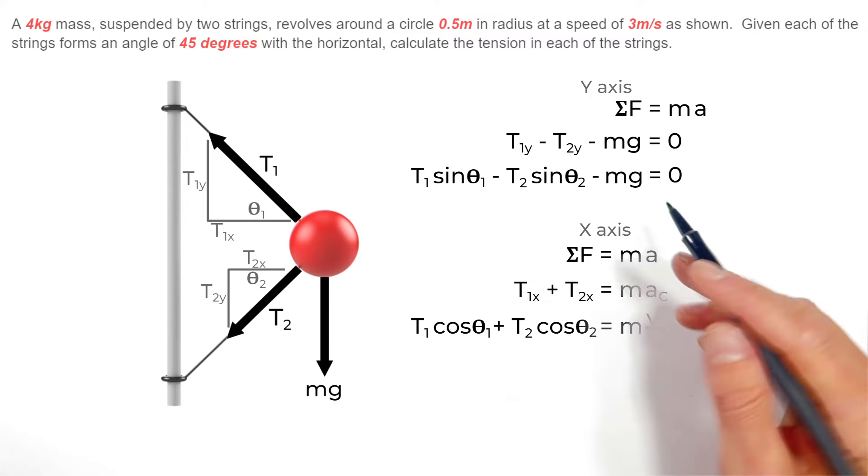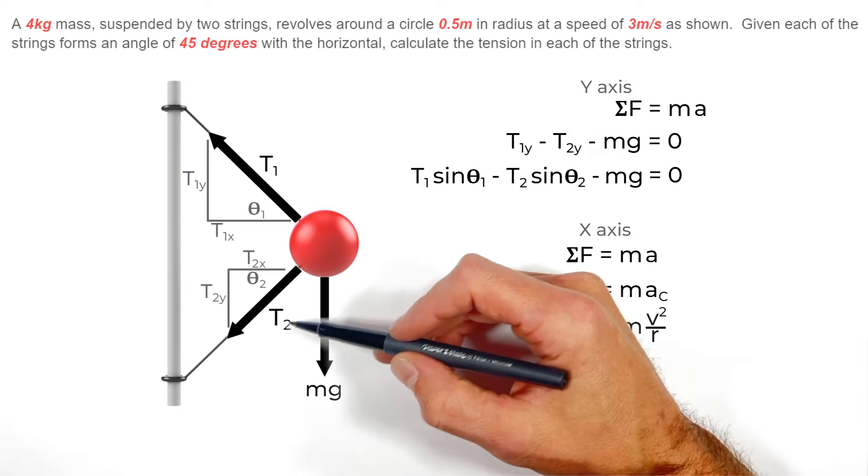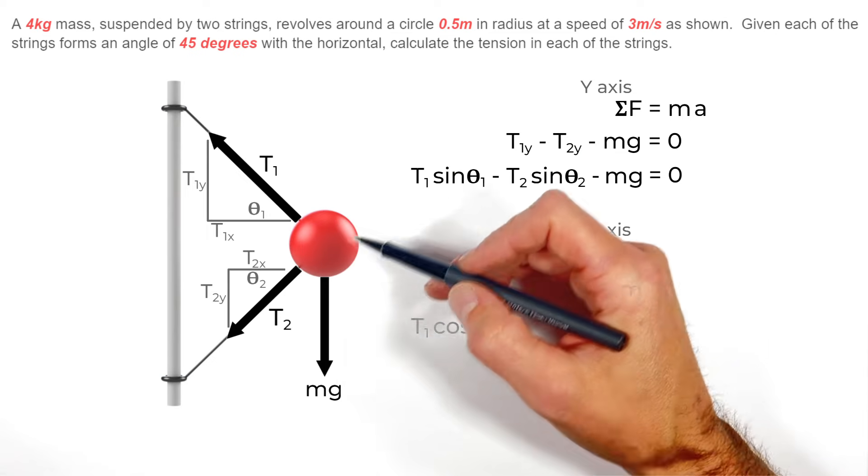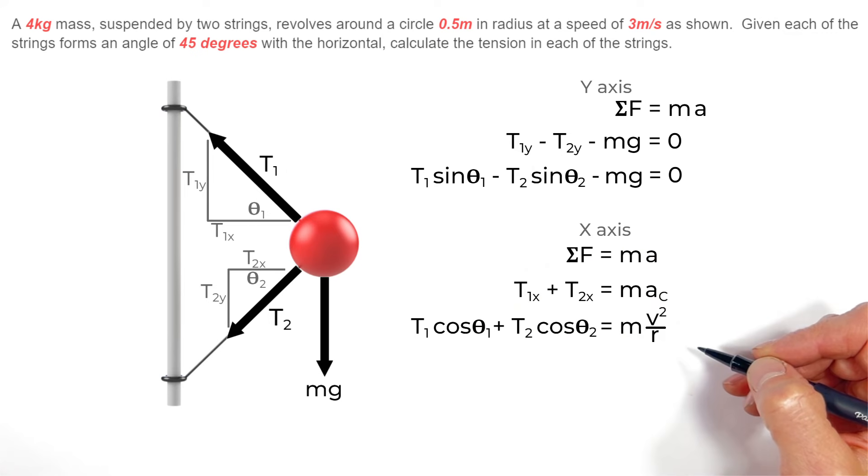Now there's one thing to point out here. I'm running through this as though these angles are just theta, and I modeled this as though the two angles are the same. But if you're working a problem where the two string angles are different, that's okay. You just have to keep your two different thetas separate from one another.